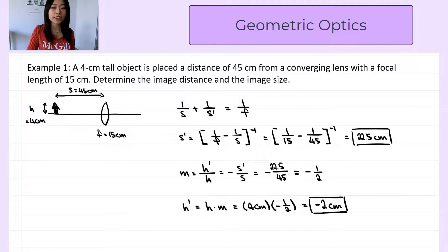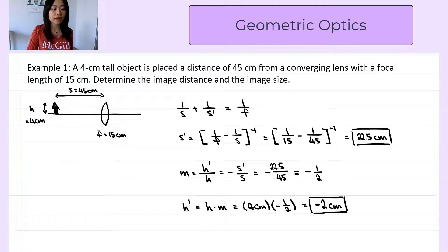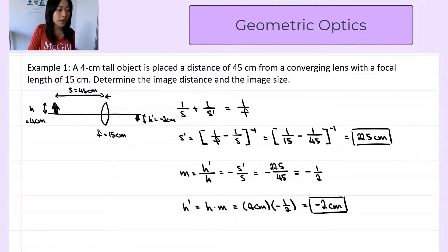Now let's sketch the image on the diagram. s prime is positive, which means the image will be on the same side as the outgoing light — so it will be on the right of the lens. It will be inverted since m is negative, and reduced by half since h prime is 2 cm. So the image is located at s prime = +22.5 cm, with h prime = −2 cm.